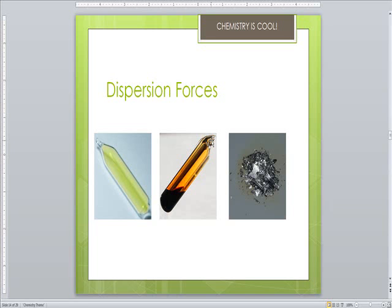For example, fluorine is a gas because it's a smaller molecule. Bromine is a liquid, it's a bigger molecule. And iodine is a solid, because remember these are all diatomic molecules.